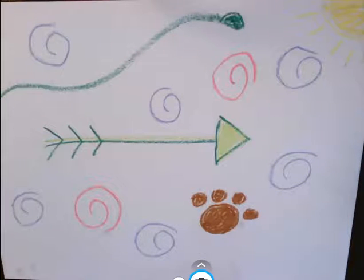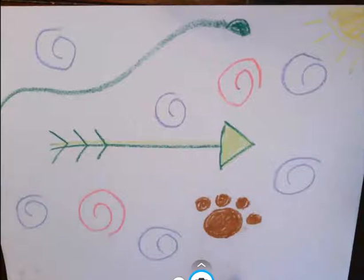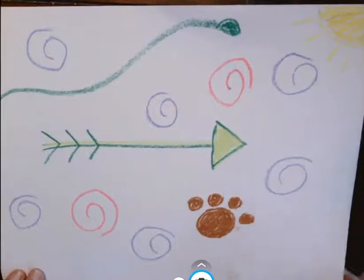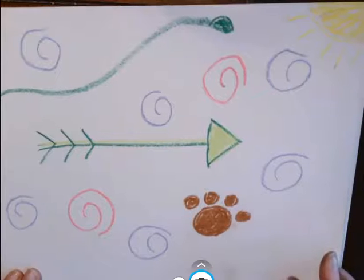Here's another example, a little more nature, the snake, the paw, the arrow, the swirlies, the sun. We are going to make something like this boys and girls.